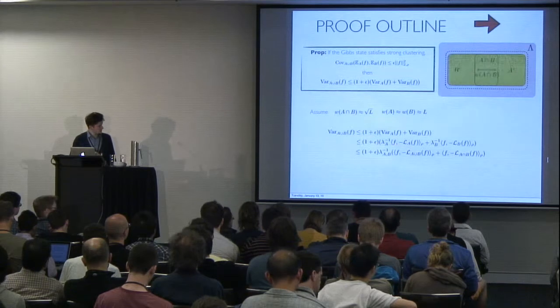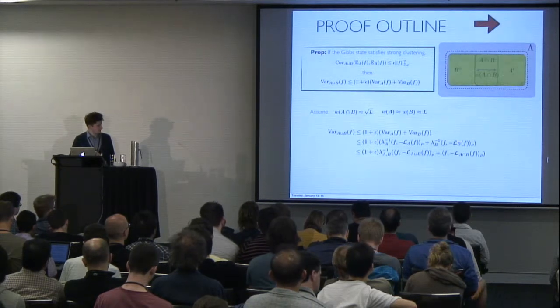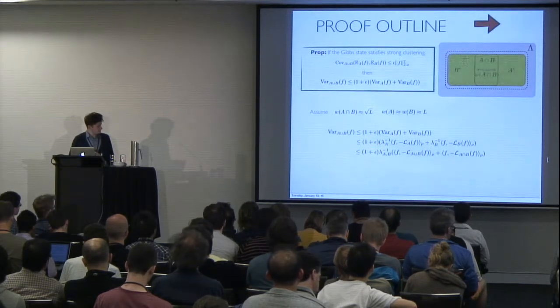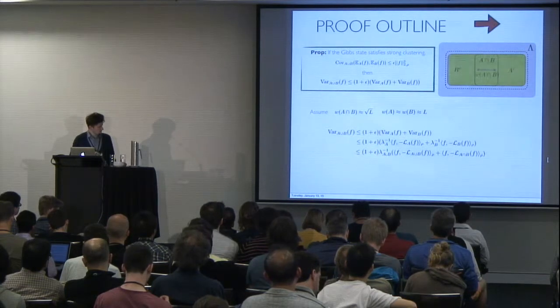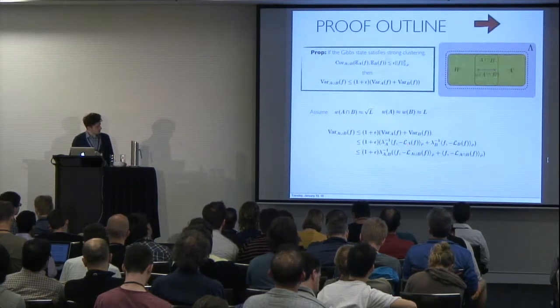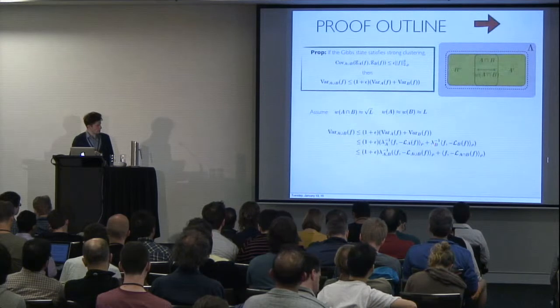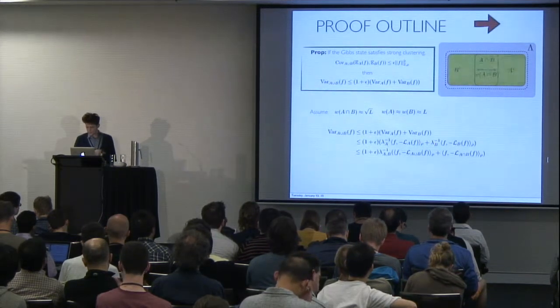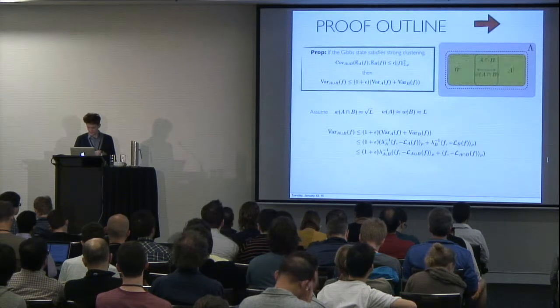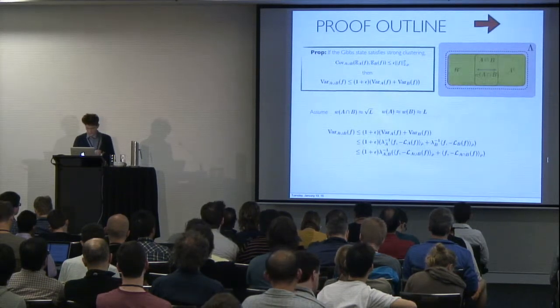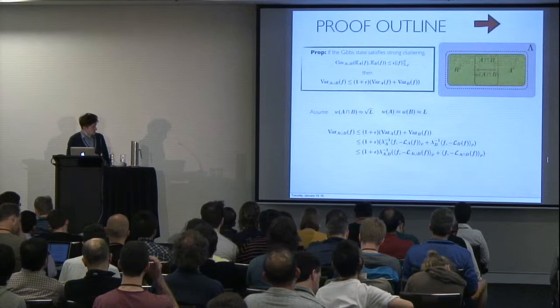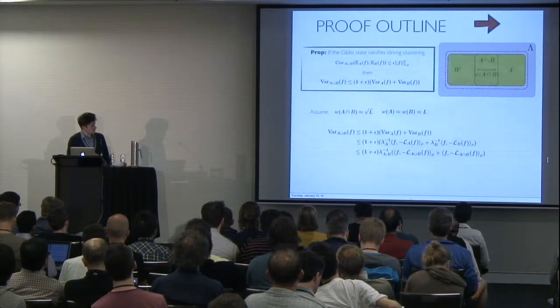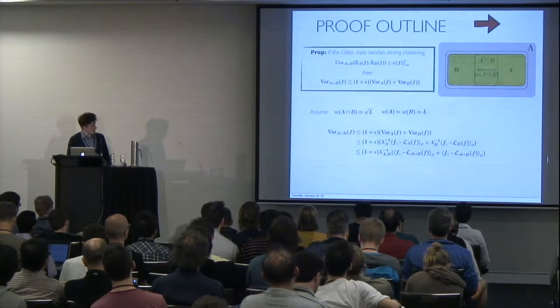Then we take the minimum of lambda A and lambda B or the maximum of inverse. And we can represent these two terms which are linear by the Dirichlet form of A union B plus the Dirichlet form of A intersection B.